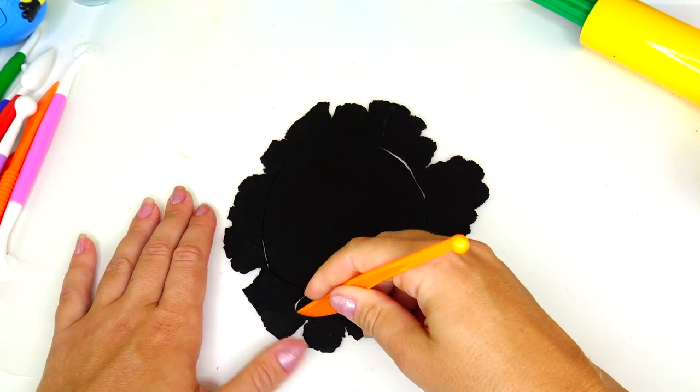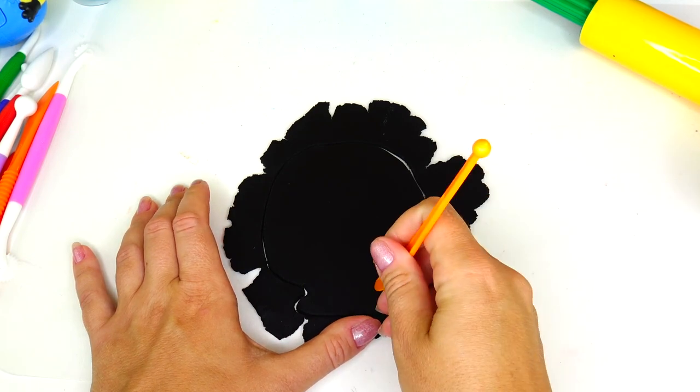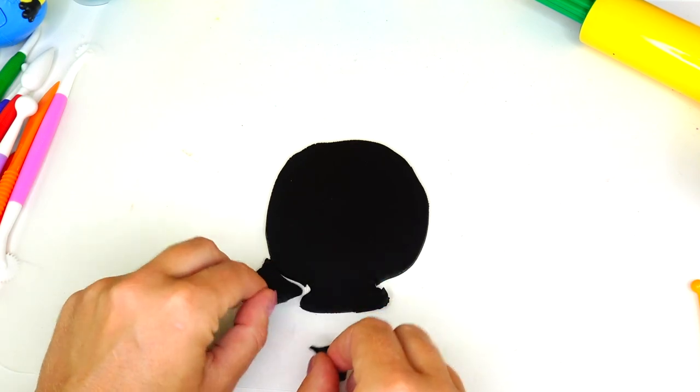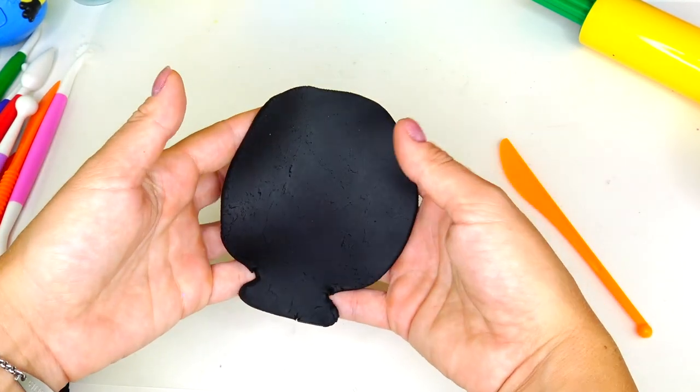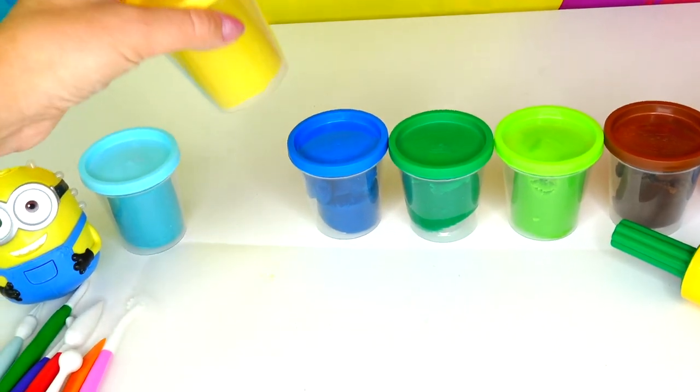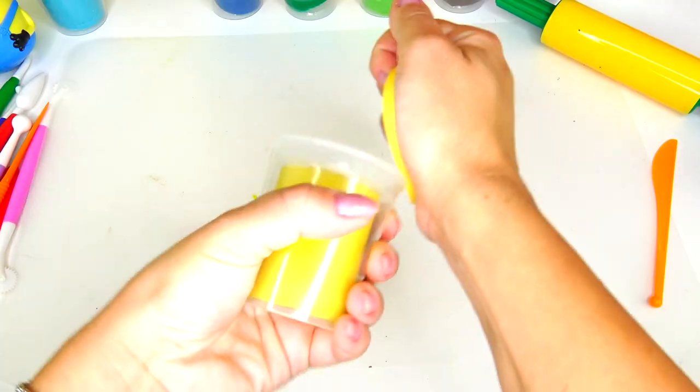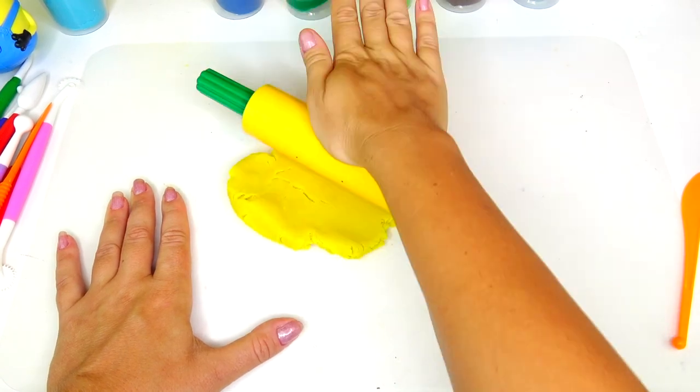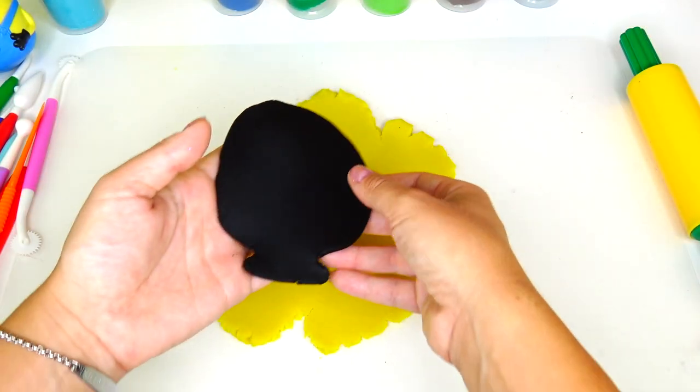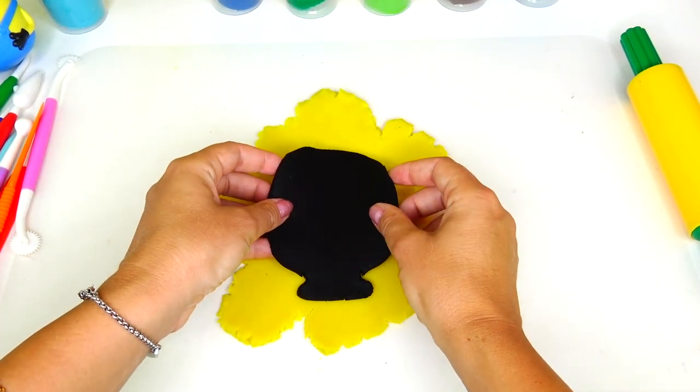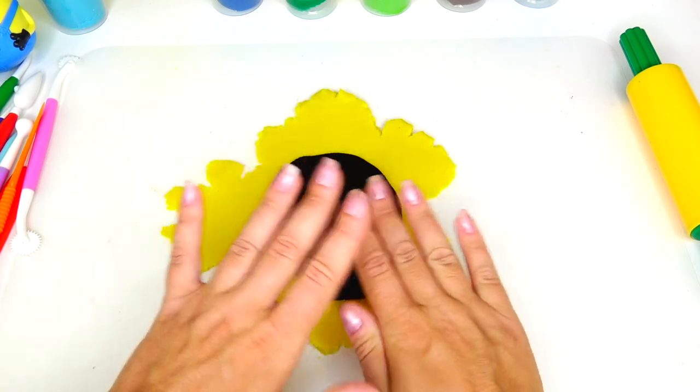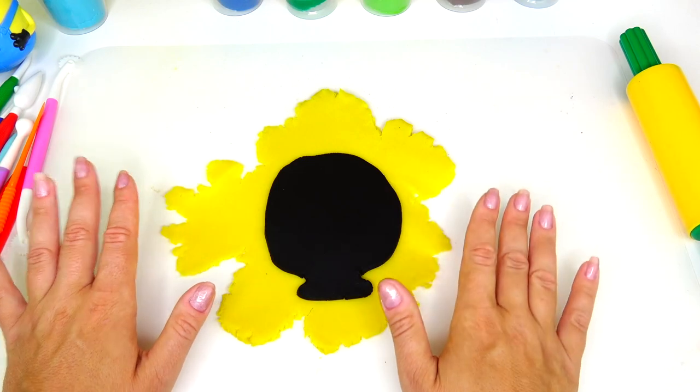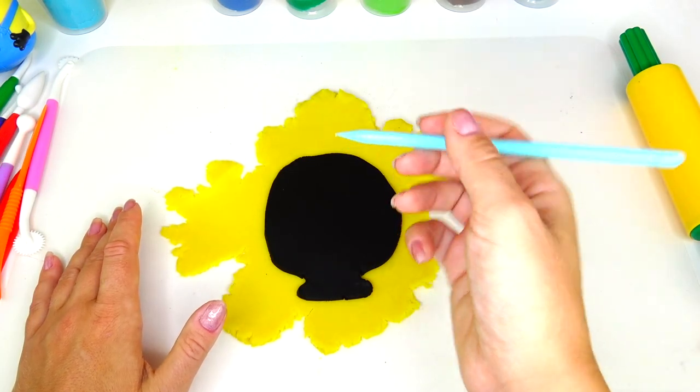Removing the excess and putting this black base aside. Next, let's take yellow colorful dough and roll it out. I'm going to place the black base on top, but very carefully - you do not want to push it down, otherwise two colors of dough are going to stick to each other.